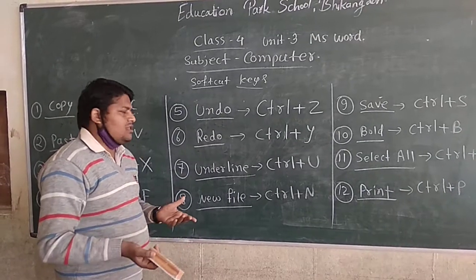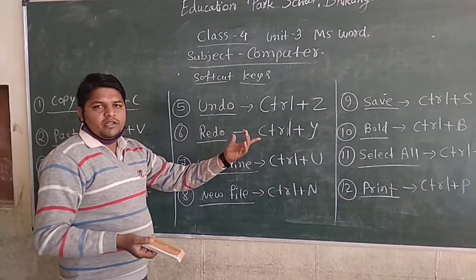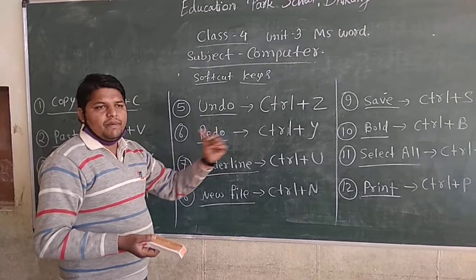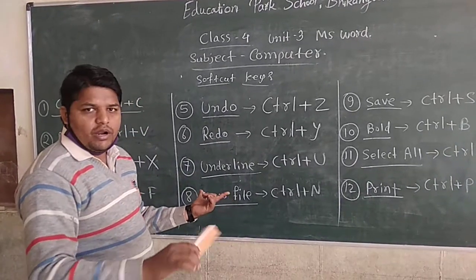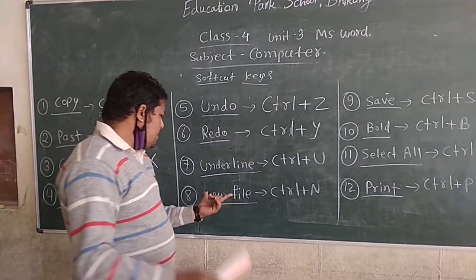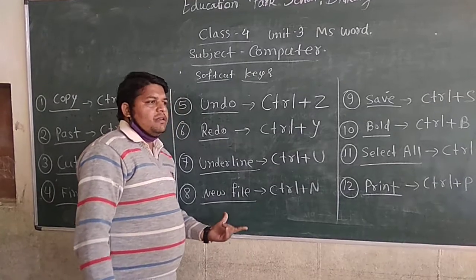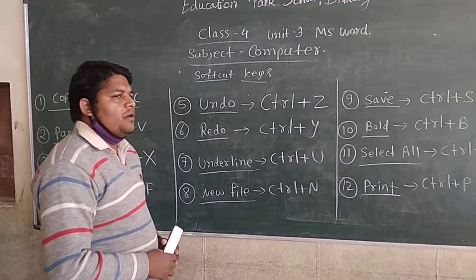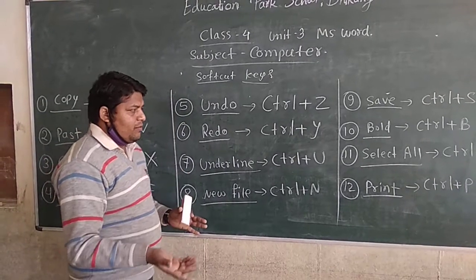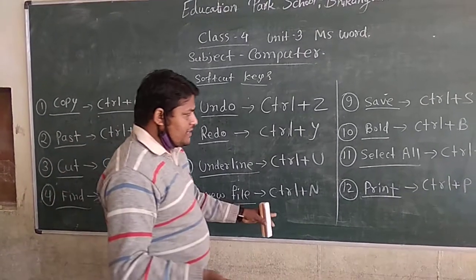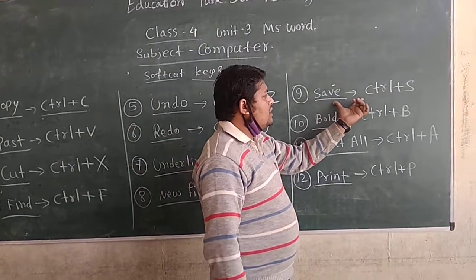Text for underline. New file, MS Word file open — Control. Save option.